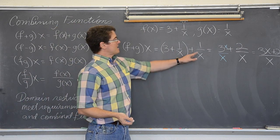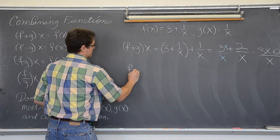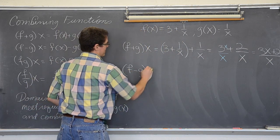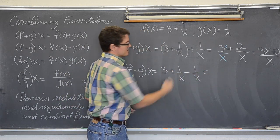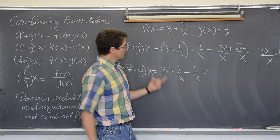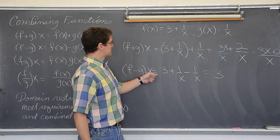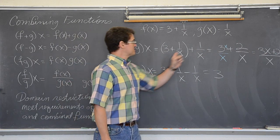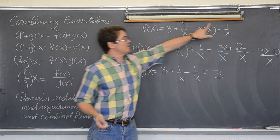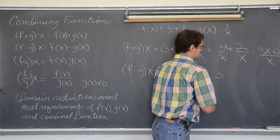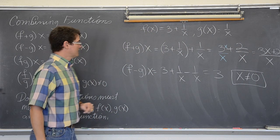For subtraction, f minus g of x gives 3 plus 1 over x minus 1 over x. Anything minus itself is zero, so we just end up with 3. Now f minus g of x equals 3 is a horizontal line, which is defined everywhere. But the domain cannot include 0, because that would make the original two parts undefined.